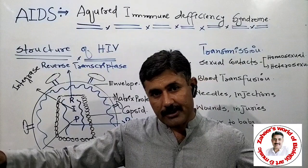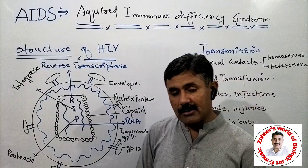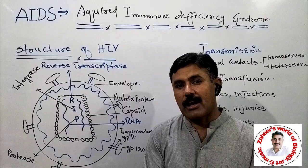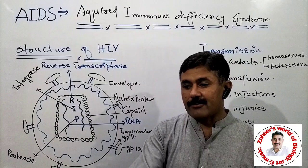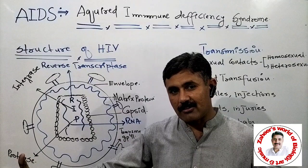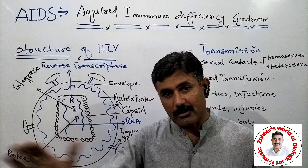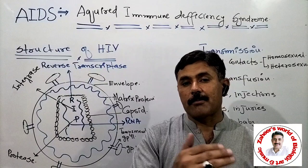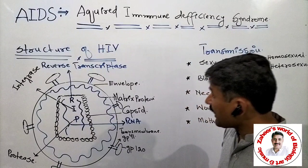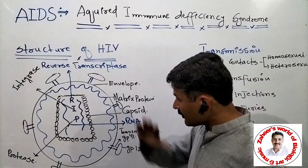The third enzyme is protease. Its function is to break large proteins into small proteins. When HIV is assembling itself after replication, RNA genome is produced and some RNA undergoes translation, producing large proteins. Protease breaks these large proteins into small proteins, which then assemble to form new HIV particles. The new HIV then bursts out of the helper cell and is released.